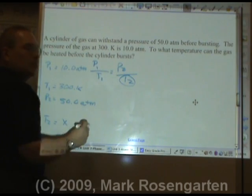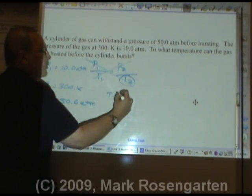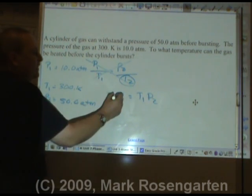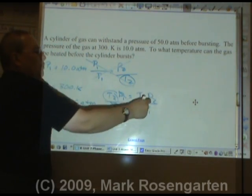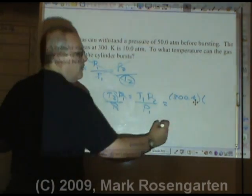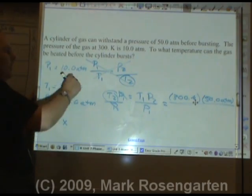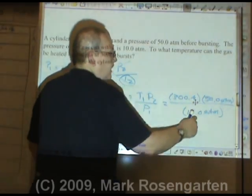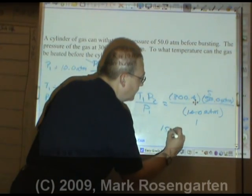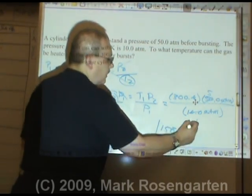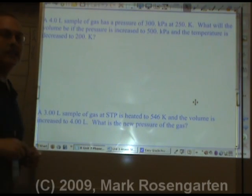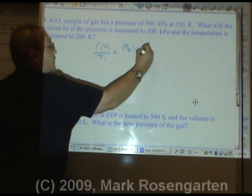Volume is constant so we ignore it. We're solving for temperature, which is in the denominator. Cross-multiplying gives T2·P1 = T1·P2. Divide both sides by P1 so pressure units cancel, leaving temperature units. T1 is 300 Kelvin, P2 is 50.0 atmospheres, over P1 is 10.0 atmospheres. Atmospheres cancel; 50 over 10 simplifies to 5, and 300 times 5 is 1500 Kelvin — three sig figs. Make the pressure five times greater and you need the temperature five times greater: a direct relationship.